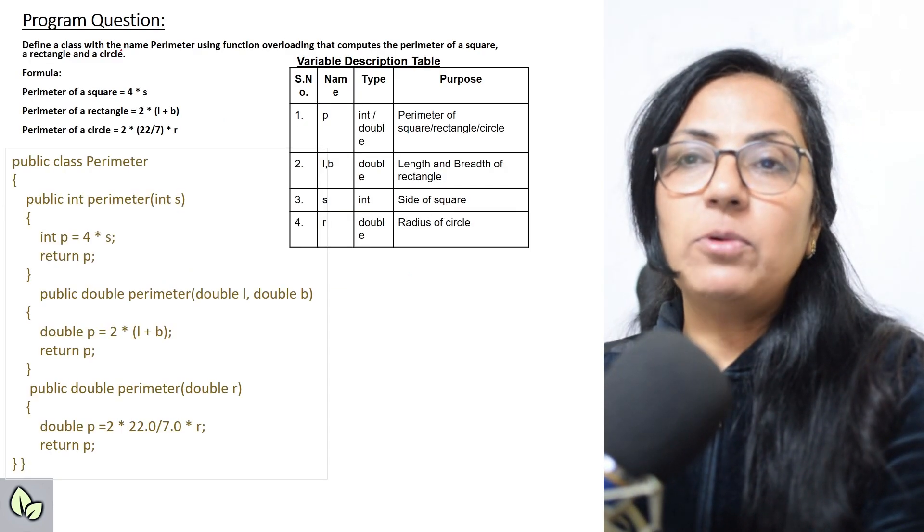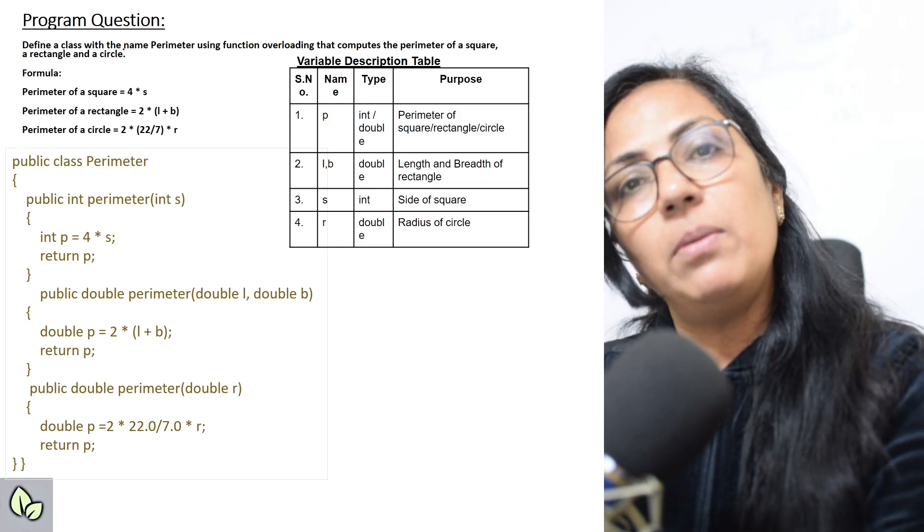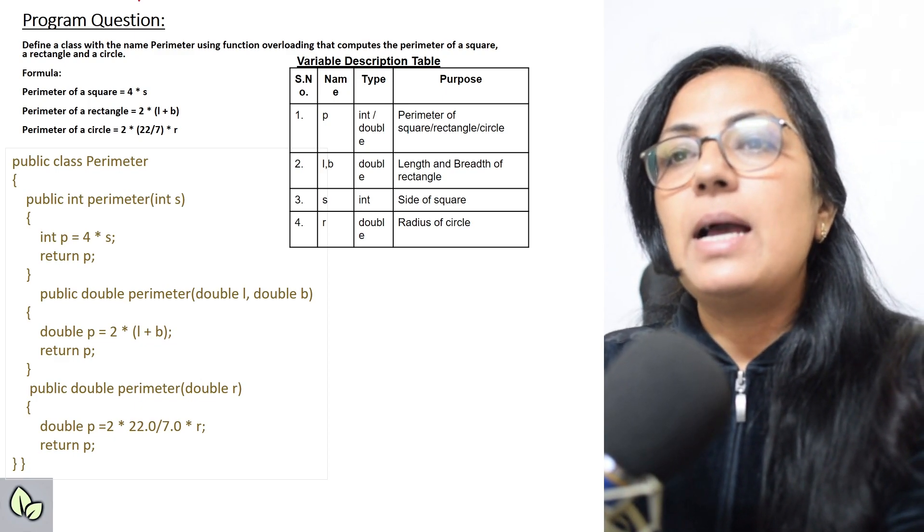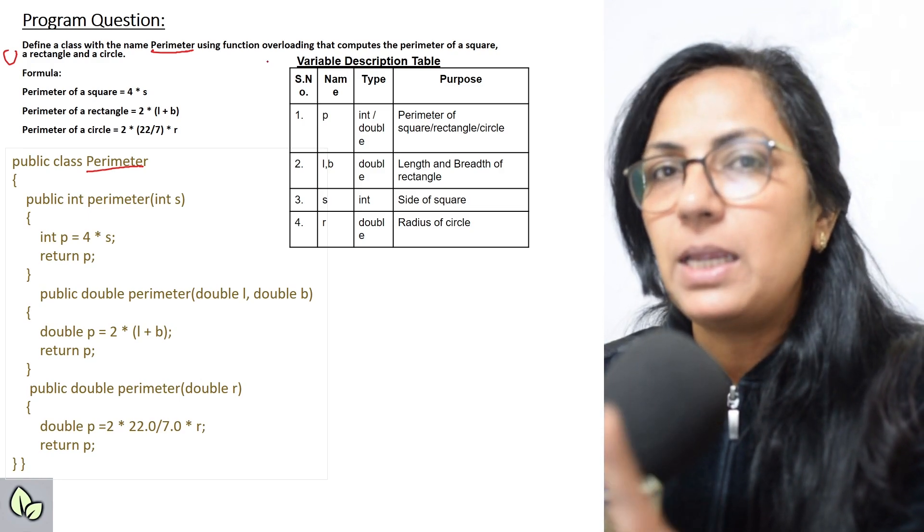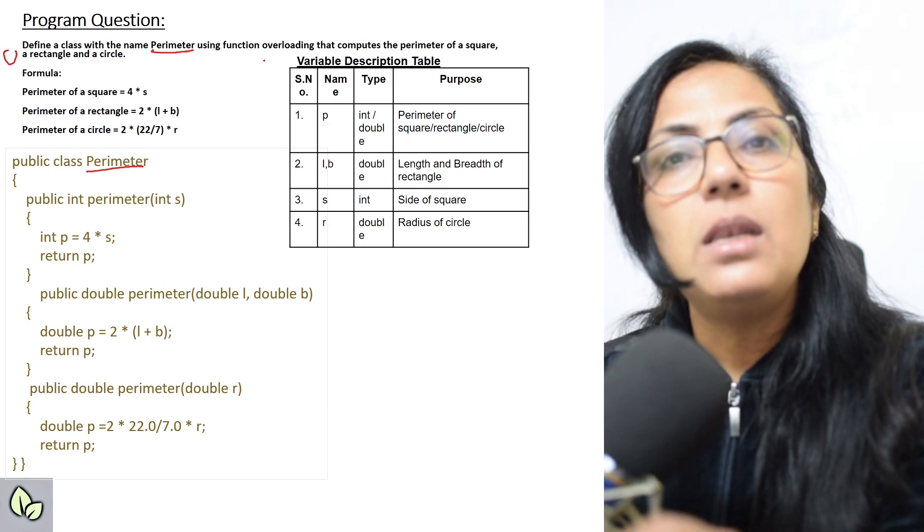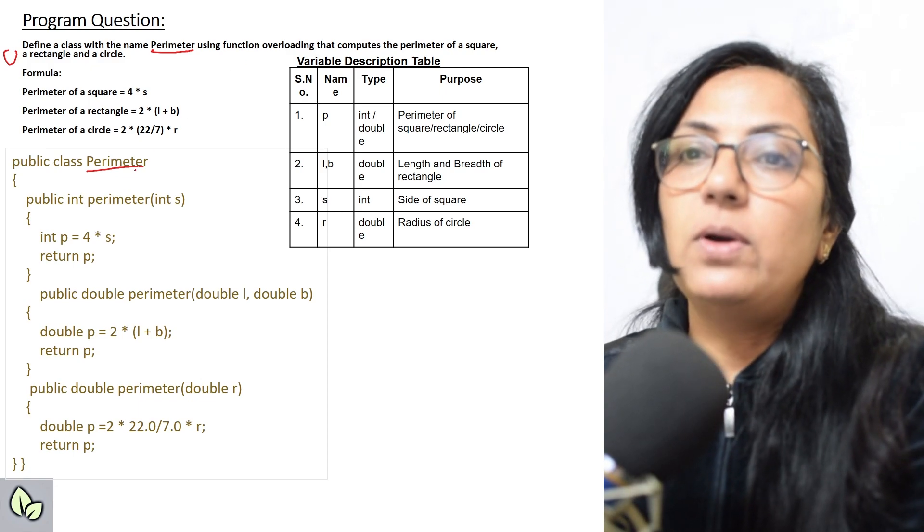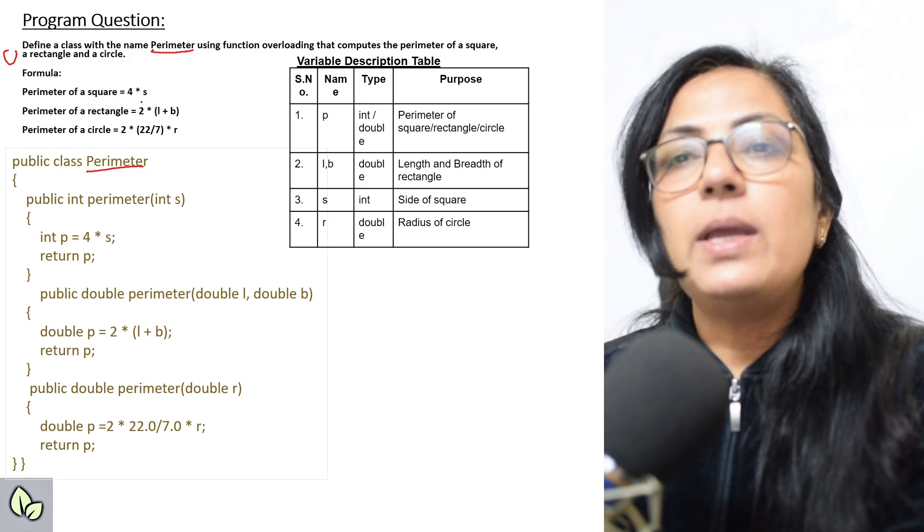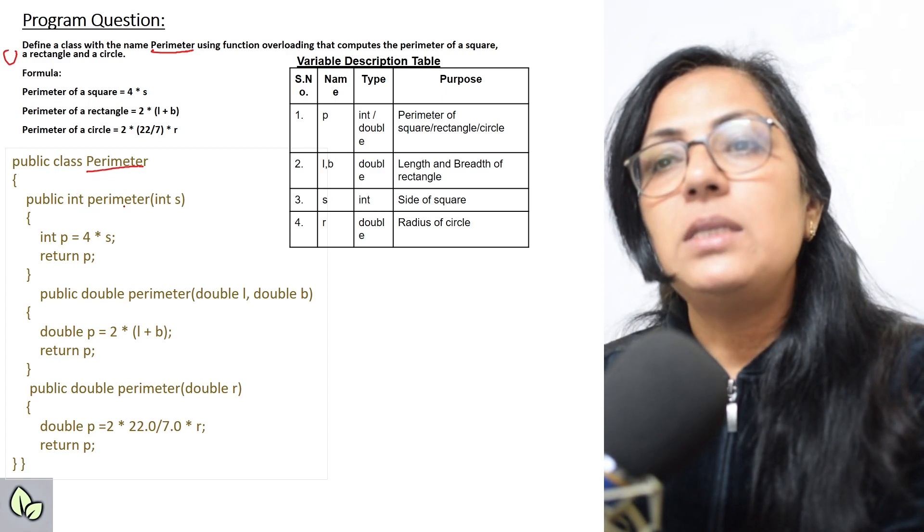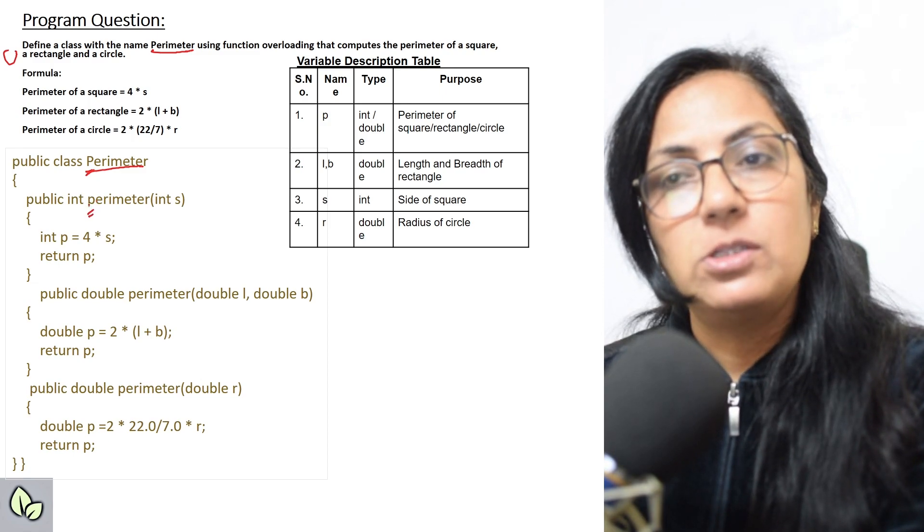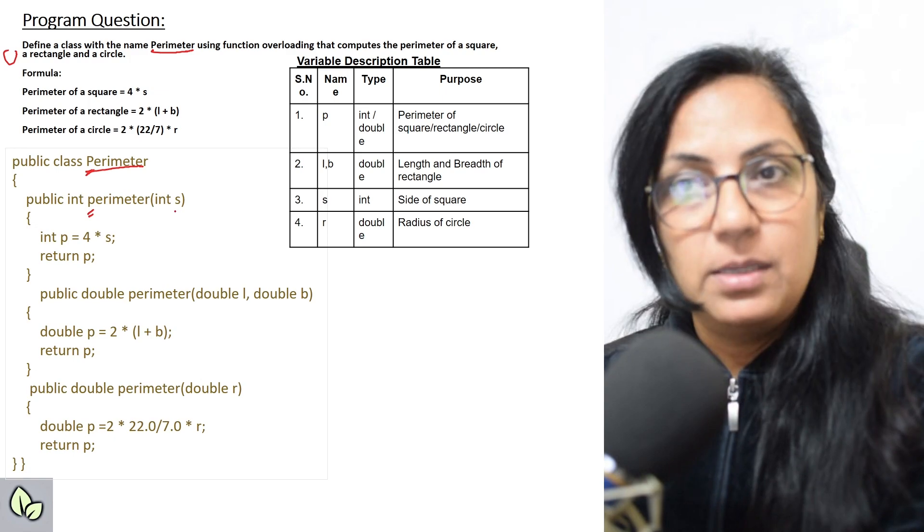Now we move on to our program question. Today I have taken the question of function overloading. One question definitely will be there from user defined functions, maybe for function overloading or maybe without that. The question says: define a class with the name perimeter. The class name is perimeter. So here you have taken perimeter using function overloading. Children, always keep in mind that in function overloading questions, especially till main function is not asked, you are not going to write the main function. And this is a very simple question, function overloading, because the formulas are also most of the time given. Perimeter of a square, now here nothing is specified what return type, what printing, so it is totally up to you. Like here I have taken int perimeter. Now children, if you notice here, class name is also perimeter, function name is also perimeter, but class name has capital P and function name is all the letters in lowercase.